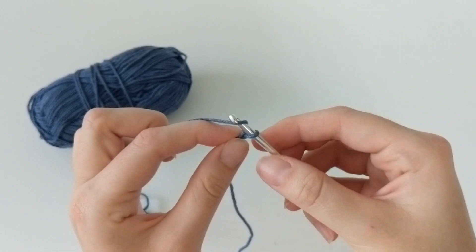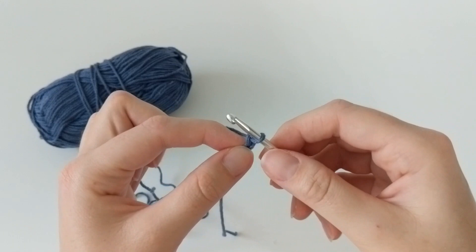Let's do that again. Wrap my yarn over the hook and pull through. Now I have two chains.